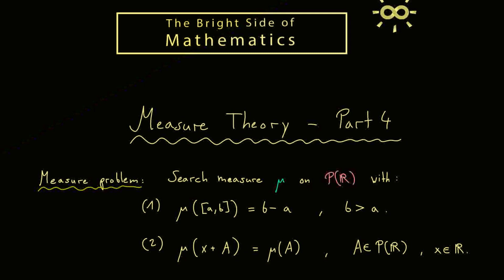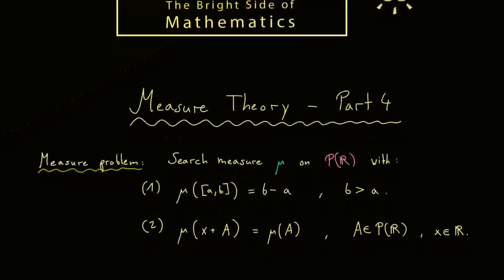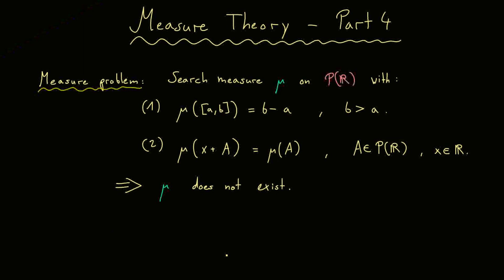However, for more than 100 years it has been known that this measure problem is not solvable. So we can't define such a measure mu on the whole power set of R. Therefore it makes sense to build the whole measure theory with sigma algebras. In the end, we will see that we can choose a suitable sigma algebra where we can indeed solve this measure problem. But in this video I start by proving that the measure problem on the power set does not have a solution.